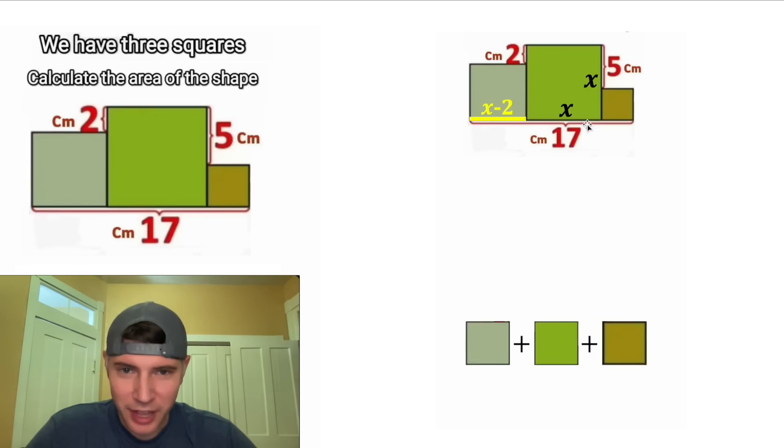And now we're starting to fill out this 17. So we have the x minus 2 right here. Let's color this blue for this portion. Now we just got to find this last bit, and then we can set it all equal to 17. Now for the last part, since the whole thing is x, and this piece is 5,